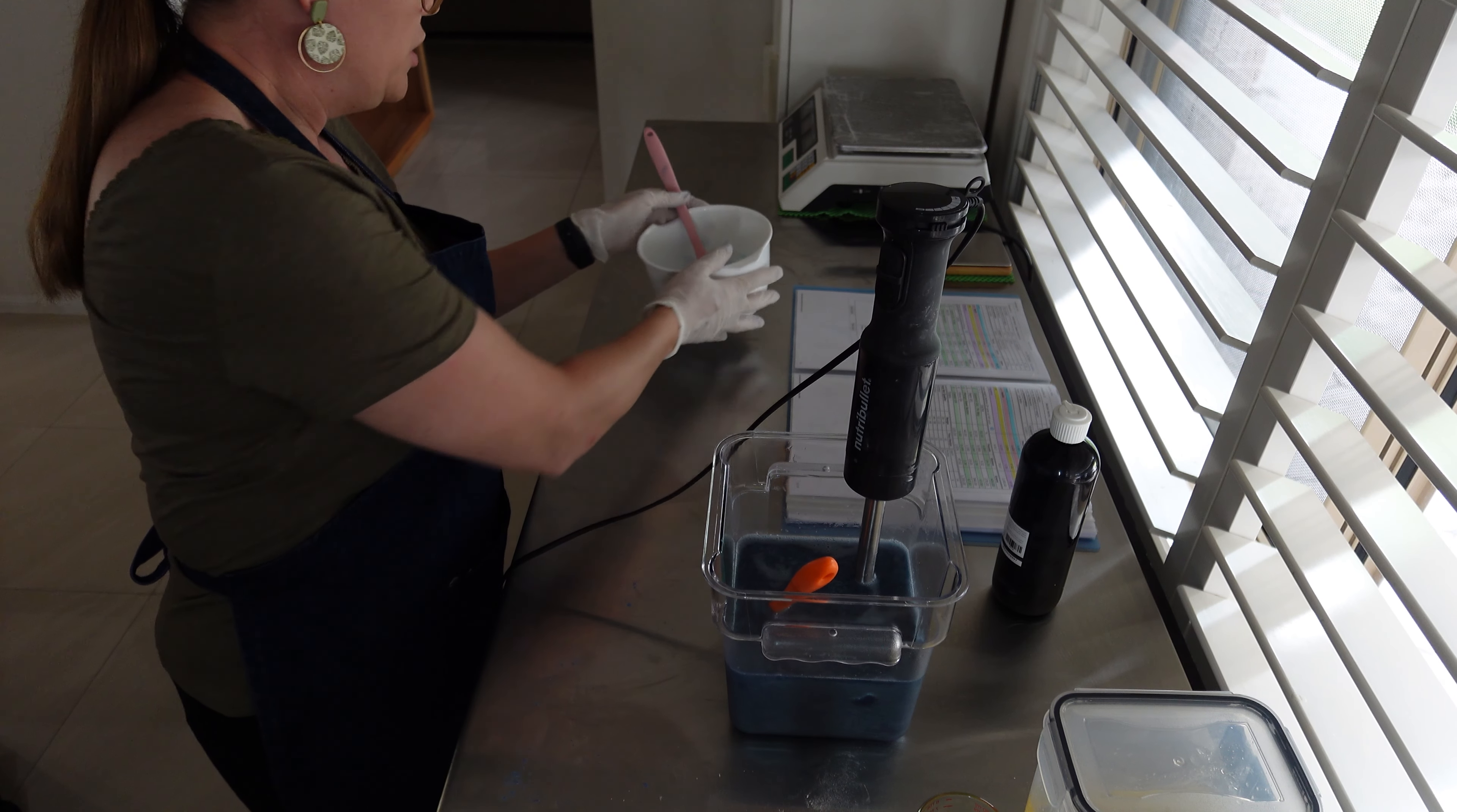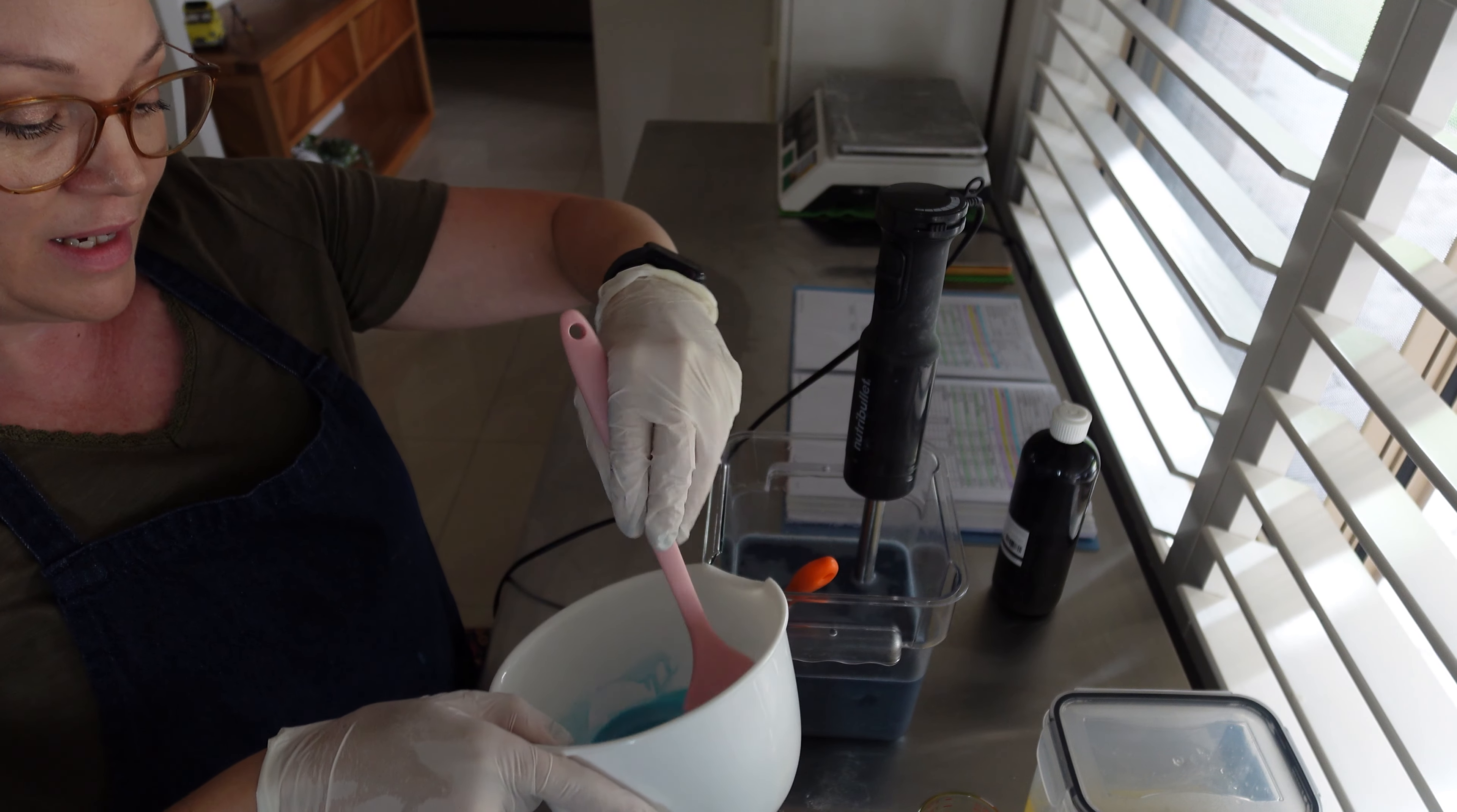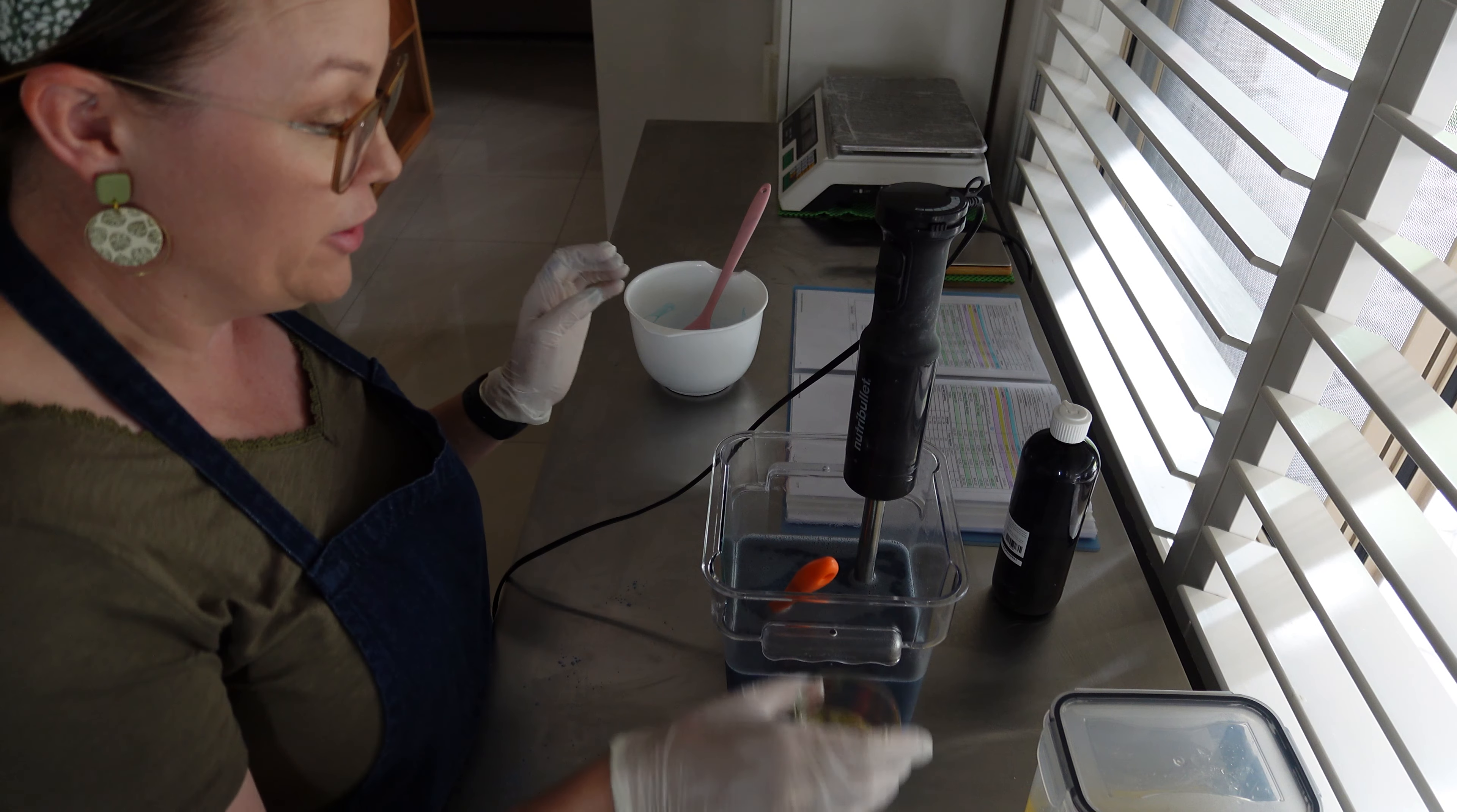Once we do our batch, what I'm going to do is pour some of that into this one here, which is the electric blue, to give me a slightly different color. And then we're just going to swirl that through, just do a drop swirl. We'll see how we go.